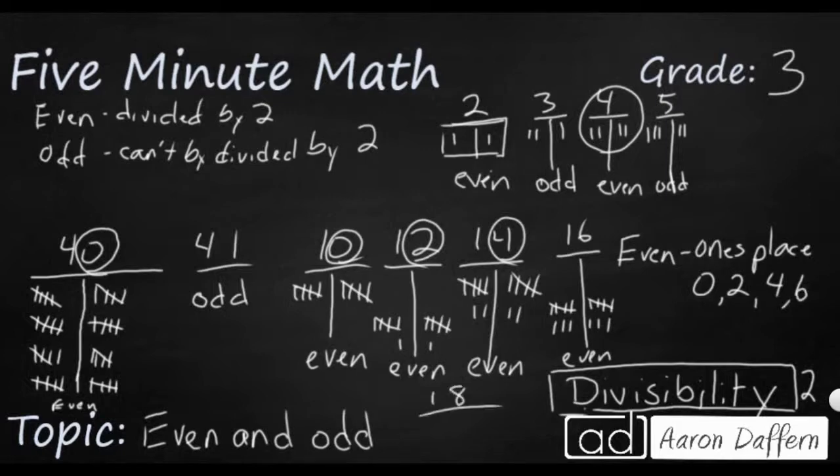Let's try 18. One, two, three, four, five, six, seven, eight, nine, ten, eleven, twelve, thirteen, fourteen, fifteen, sixteen, seventeen, eighteen. Yes. So if your ones place has got a 0, 2, 4, 6, or 8, you are even.